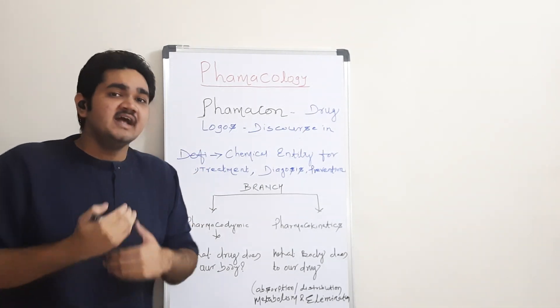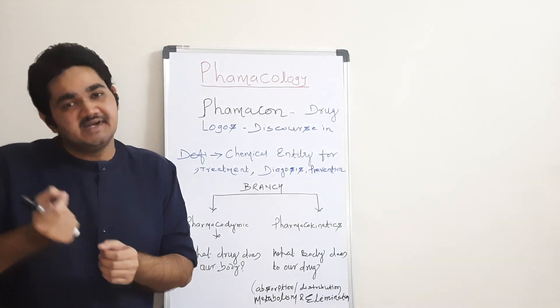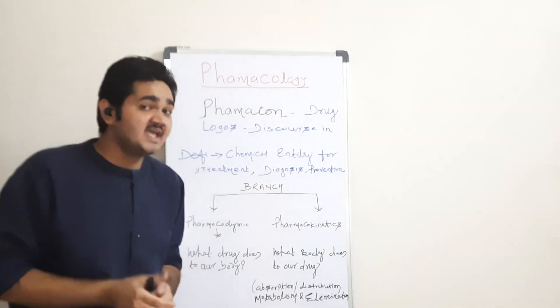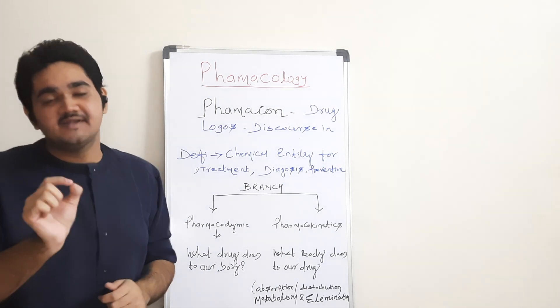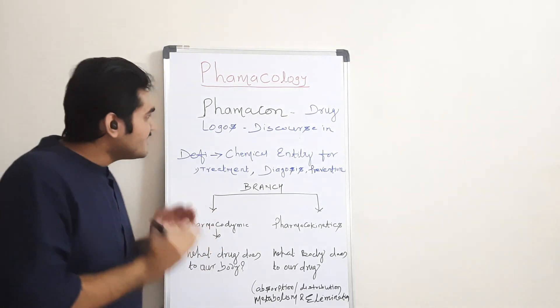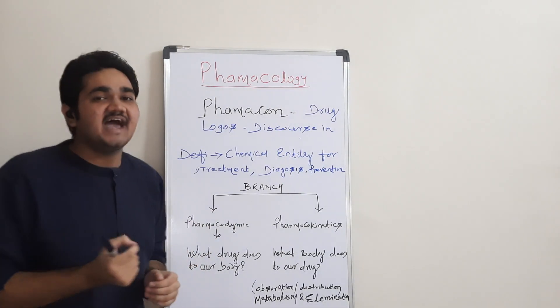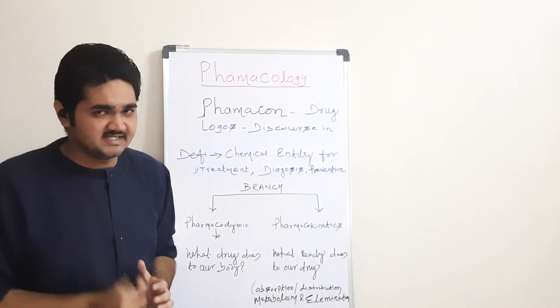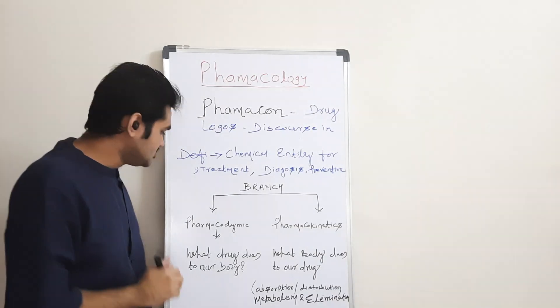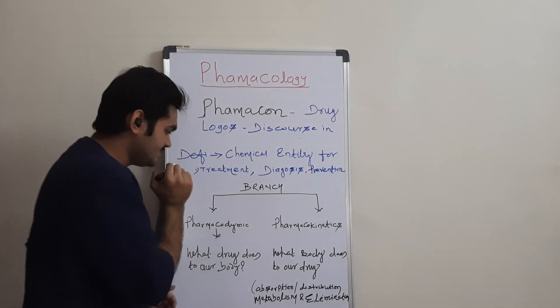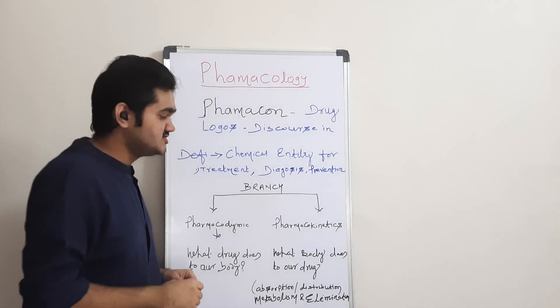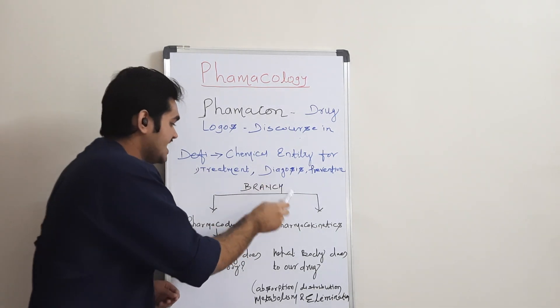Just as science has different branches, similarly maths has different branches. In this subject, we have two main branches. The first branch is pharmacodynamics and the second branch is pharmacokinetics.